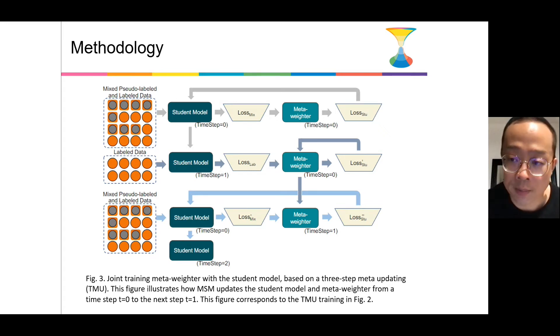In the last step, we input the mixed pseudo-labeled and golden-labeled data again to student model. It should be noticed that we use the student model in time step 0 here rather than use the student model in time step 2. This is because the student model in time step 2 is updated with the noised data, so the student model may have been misled by the noise. For such reason, we use the student model in time step 0 and the updated meta-weighter in time step 2 to finish this final training step. By such a process, we can alleviate the influence from the noised pseudo-labeled data at most.